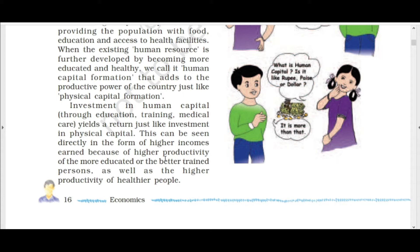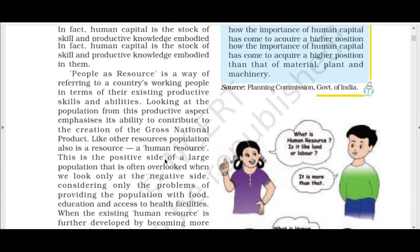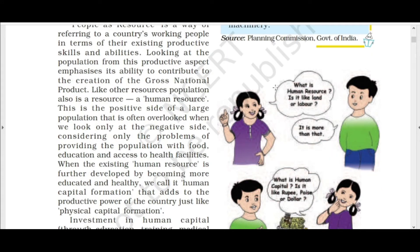Investment in human capital through education, training, and medical care yields a return directly in the form of higher incomes, because of the higher productivity of more educated and better-trained persons, as well as the higher productivity of healthier people. The diagram shows a student asking what human resource is — whether it is like land or labor — and the answer is: it is more than that.